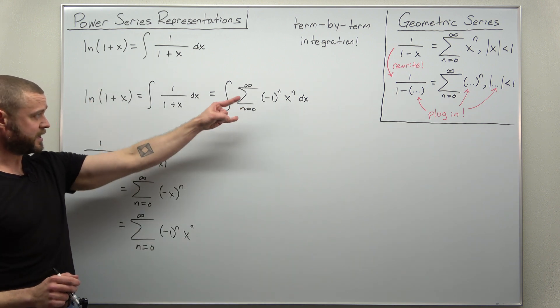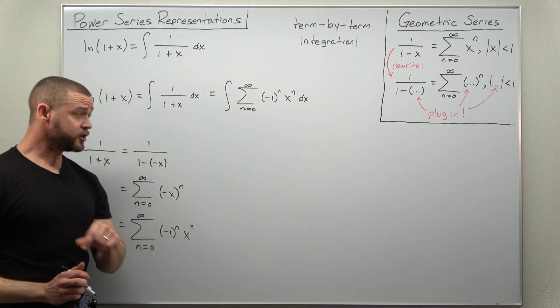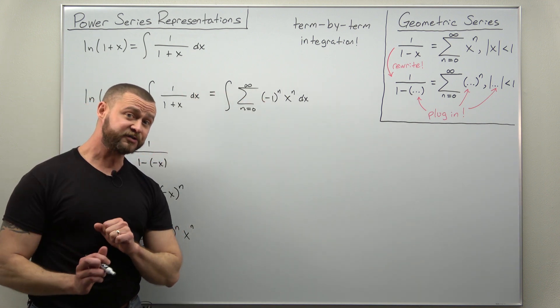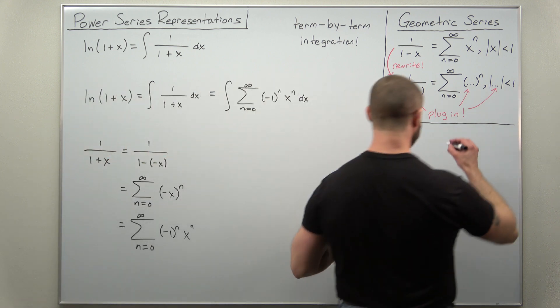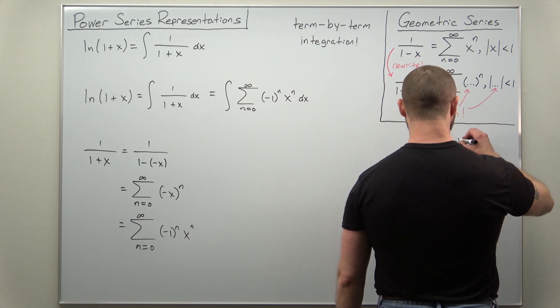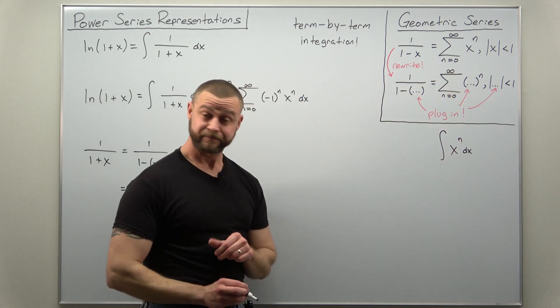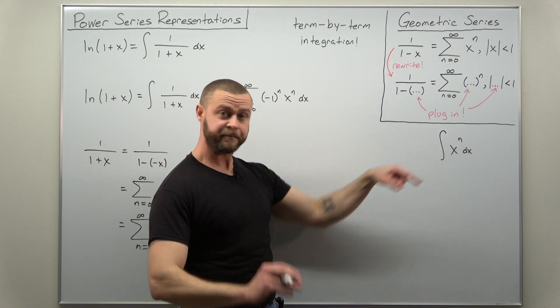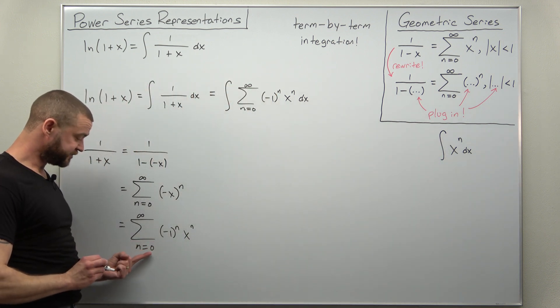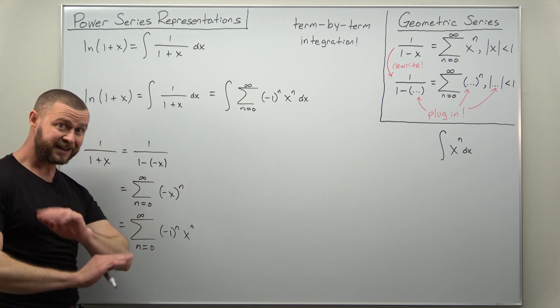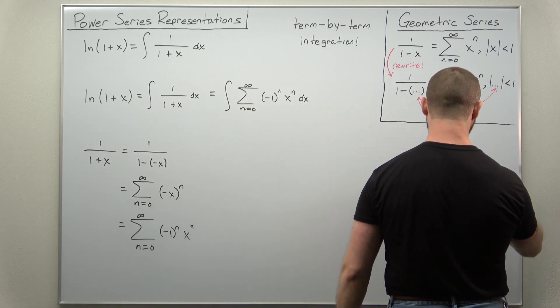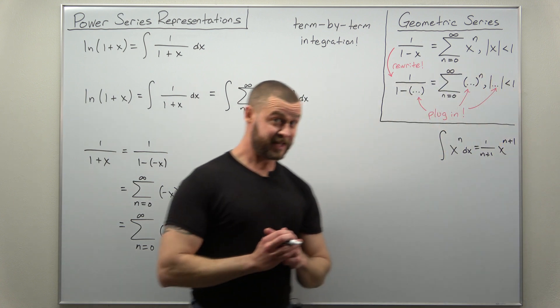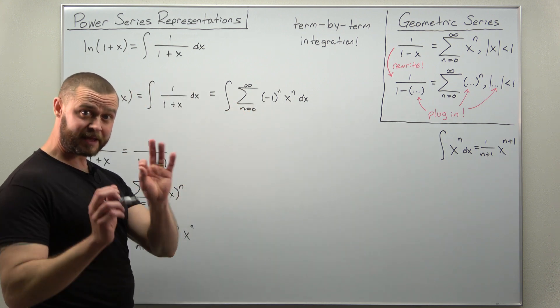And we're going to interchange the integral and the summation here. And we're going to focus on just integrating x to the n. This is basically a bunch of powers of x. And powers of x are very easy to integrate. What we're going to be using is the antiderivative of x to the n. That's really simple. We apply the power rule. Just make sure your exponent is not negative 1, which we're avoiding here due to the sums. n starts with 0 and goes to infinity. So the exponent is never going to be negative 1. Just go ahead and apply the power rule. For antiderivatives, you get 1 over n plus 1 times x to the n plus 1.